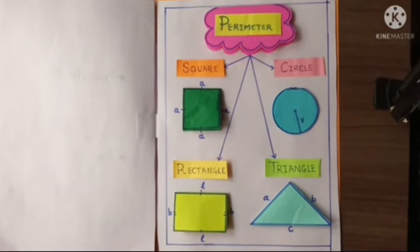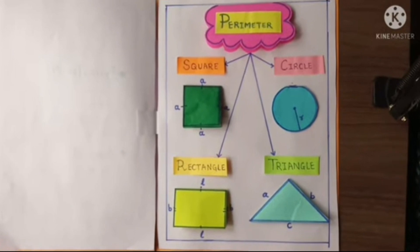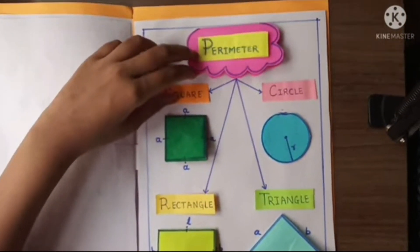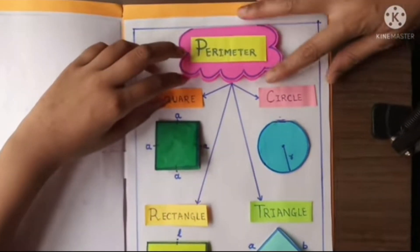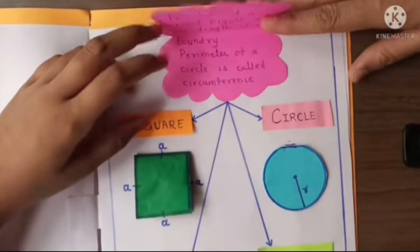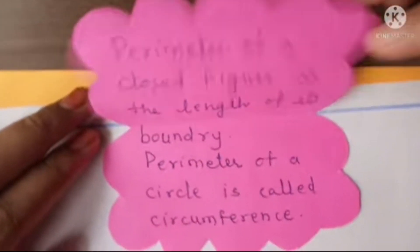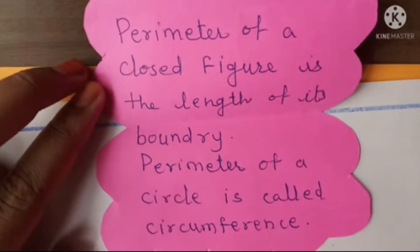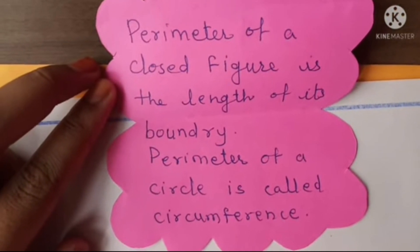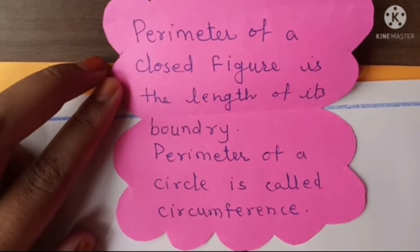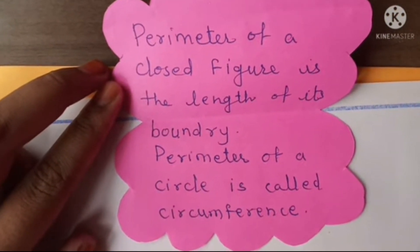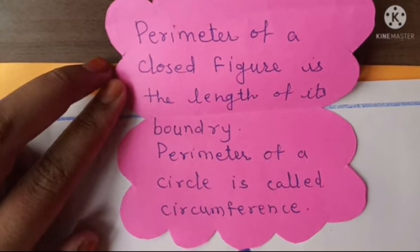Here is our first topic: perimeter. Here is the definition of perimeter. The perimeter of a closed figure is the length of its boundary. The perimeter of a circle is called circumference.